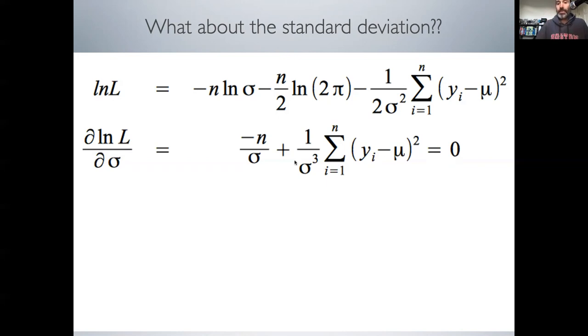First, we move the minus n over sigma term to the other side. Then multiply both sides by sigma cubed. That eliminates the sigma cubed on the right and leaves sigma squared on the left, since we have sigma cubed divided by sigma.